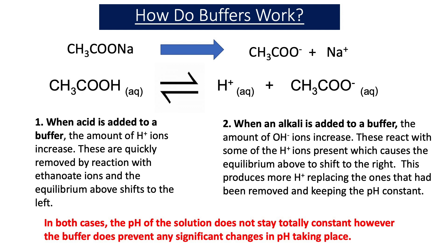Now let's look at how this buffer system resists changes in pH when small amounts of H⁺ or OH⁻ ions are added. When H⁺ ions are added, they react with the ethanoate ions (CH₃COO⁻) and the equilibrium shifts to the left. The added H⁺ ions are therefore removed by reacting with ethanoate ions. This is why it's important to have a high concentration of ethanoate ions present.